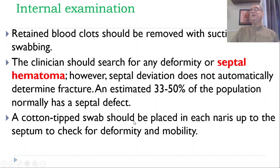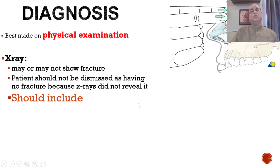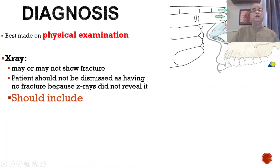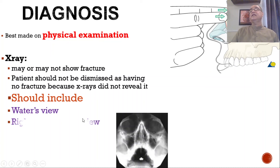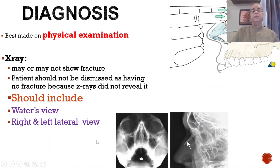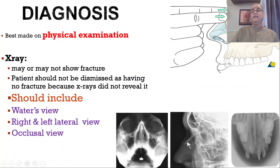A cotton-tipped swab can be used instead of a finger for palpation of the nasal septum to assess deformity and mobility of its fragments. Best diagnosis is achieved on physical examination; bimanual palpation is essential for detecting tenderness, step deformity, and crepitus. For radiological examination, plain X-rays may or may not show the fracture, so a patient should not be dismissed as having no fracture because the X-ray did not reveal it. Different views are recommended: Water's view, right and left nasal bone views, and occlusal view using a dental film inside the oral cavity to assess fractures of the floor of the nasal cavity.